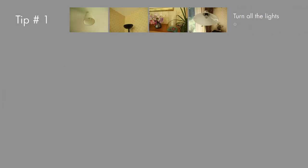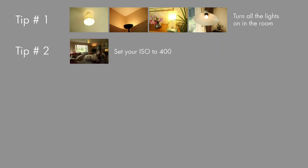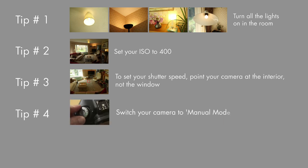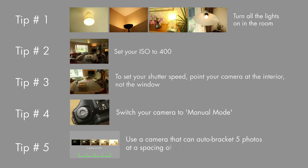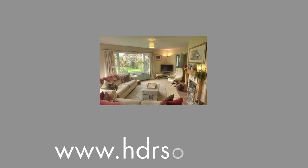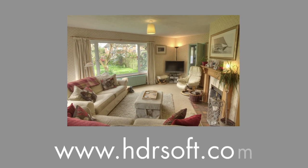Let's recap on our five tips. Turn all the lights on in the room. Set your ISO to 400. To set your shutter speed, point your camera at the interior, not at the window. Switch your camera to manual mode. And finally, use a camera that can auto-bracket five photos at a spacing of two EV. These tips should help you get started — use them, and you'll soon see how much they improve your real estate interiors.